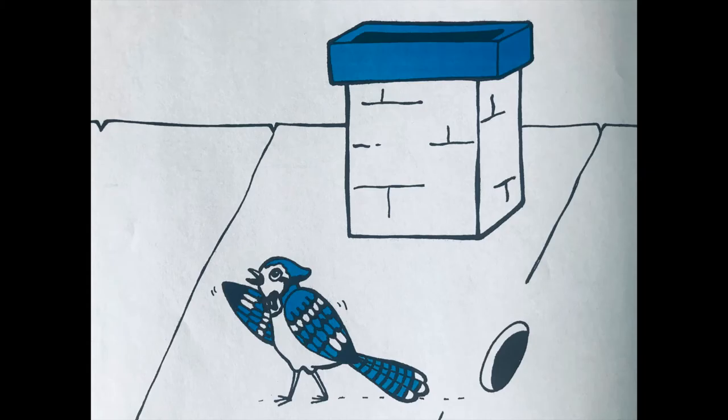He flew off and fetched another acorn and dropped it in. He tried to flirt his eye to the hole quick enough to see what became of the acorn, but he was too late. He fetched another acorn and did his best to see what became of it, but he couldn't. He walked back and forth on the roof, shaking his head and muttering to himself. He said, Well, you are a deep hole, but I've started to fill you, and I'm going to fill you if it takes 100 years.